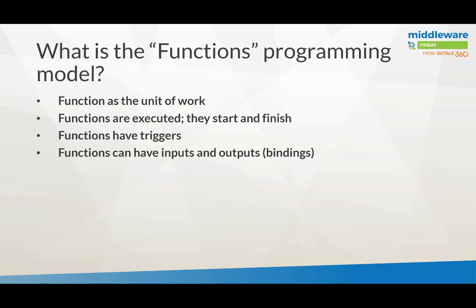If you look at the function programming model itself, functions are the small unit of work you can do. They're executed through a trigger and they ultimately finish. Either if they fail, nothing will happen, but based on the associated data on that trigger, if there is any, it will have inputs and outputs — and that's done through binding.